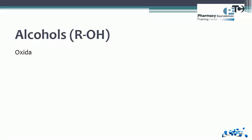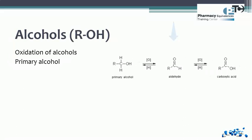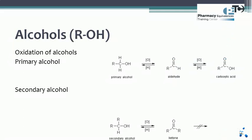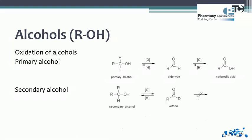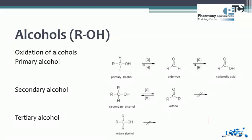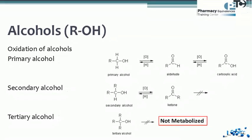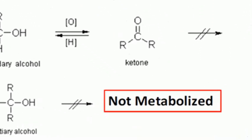Regarding the oxidation of alcohols, it is important to know that a primary alcohol can be oxidized in two steps: the first step yields an aldehyde, and the second step yields a carboxylic acid. A secondary alcohol is oxidized in one step to give a ketone. A tertiary alcohol, because it has no hydrogen attached to the carbon bearing OH, cannot be oxidized and is not metabolized.